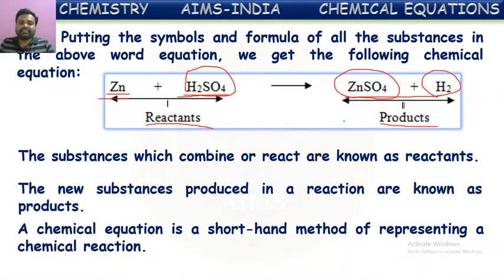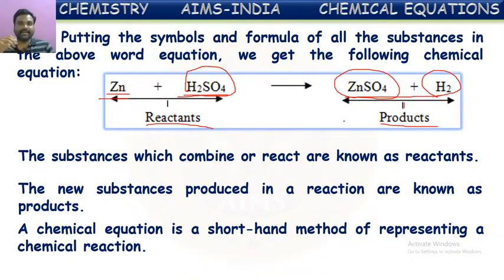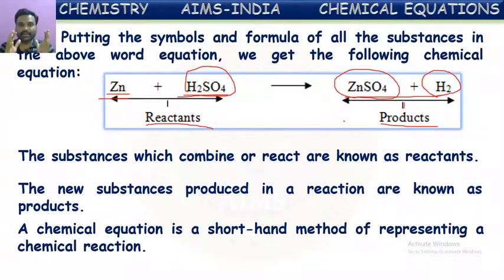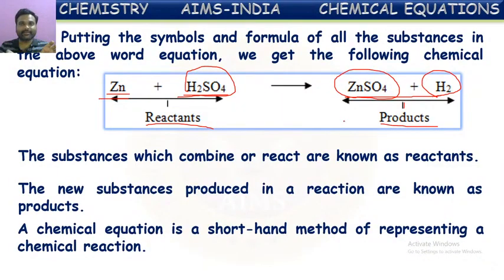A chemical equation is a shorthand method of representing a chemical reaction. In the representation of a chemical reaction, we use shorthand notations like symbols and formulae for the reactants and products. So finally, the chemical equation is the shorthand notation or shorthand representation of a chemical reaction, in which reactants and products are represented using their symbols and formulae.